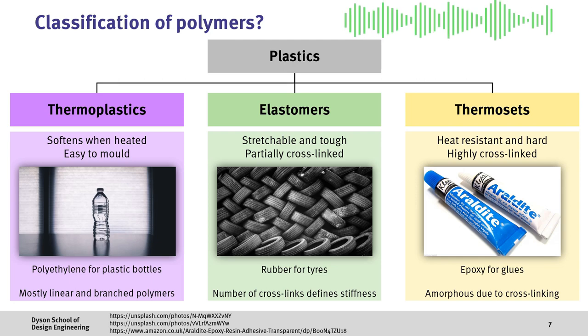An example of a thermosetting polymer is epoxy, which is used as a glue. Here, two chemicals are mixed together to form the cross-links.